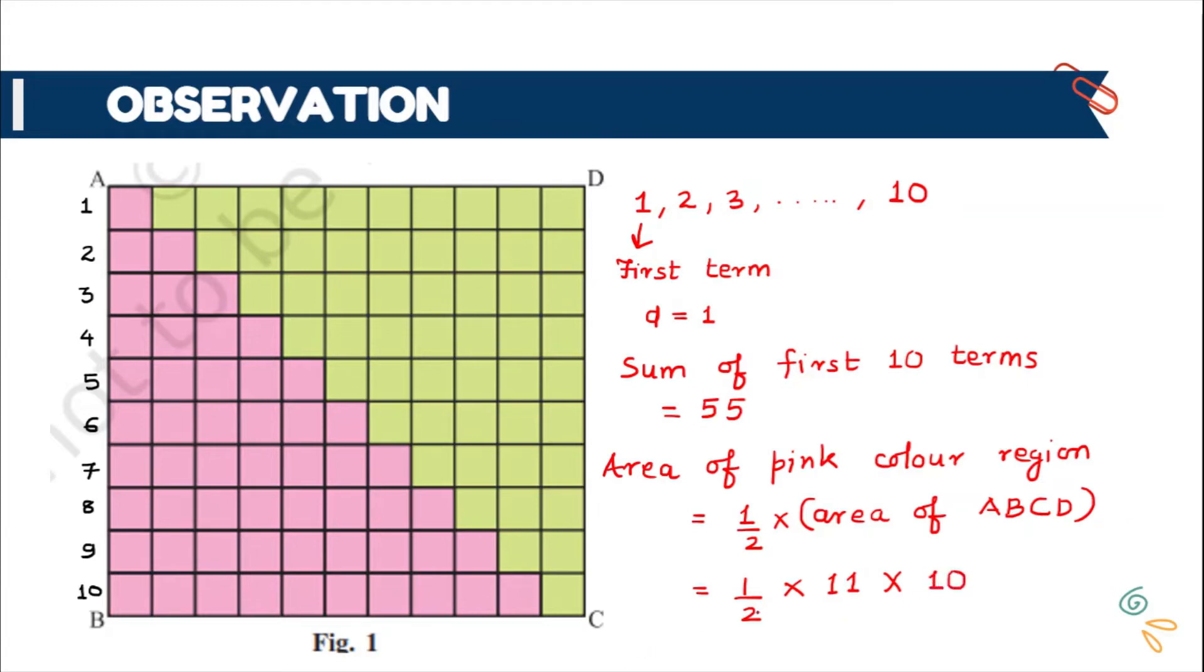So half into its length BC is 11 and its breadth is 10. So if you will simplify this, 2 times 5 is 10, here I am getting 55. So here also using calculator, you can find 55. You can also count these pink boxes or by simply using this formula, you can find that sum of the first 10 numbers is 55.